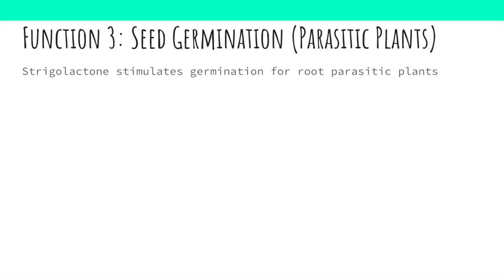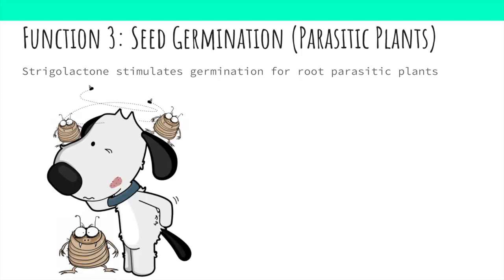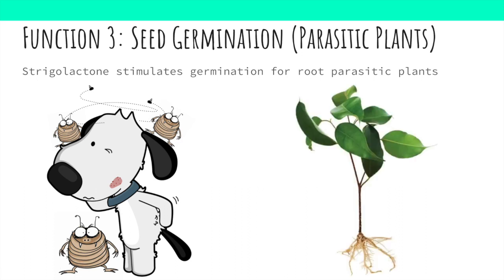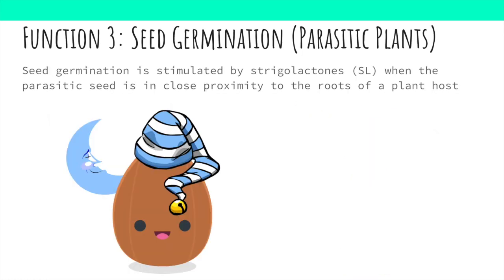Lastly, strigolactones act as germination stimulants for root parasitic plants. Strigolactones were actually first discovered in roots due to their ability to stimulate germination in the seeds of a parasitic plant known as the striga, or witchweed. Root parasitic plants parasitize other plants and cause damage at the roots of the host. Just like fleas are parasites to mammals, some plants rely on other plants for food. In order to grow and develop, these parasitic plants must find a host plant, and seed germination is stimulated by strigolactones when the parasitic seed is in close proximity to the roots of a host plant.